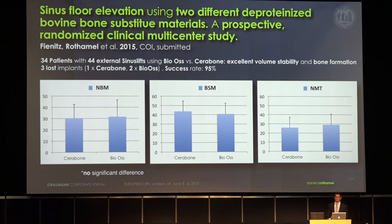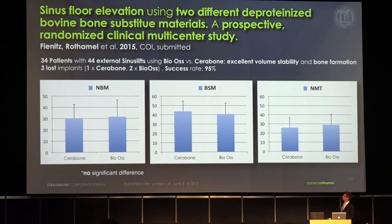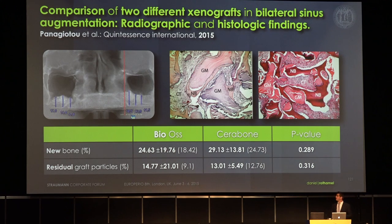We performed a prospective randomized multicenter clinical study comparing BIOS versus cerabone — a non-sintered versus sintered material — in 44 external sinus lifts in 34 patients. We found excellent volume stability and nice bone formation for both materials. Newly formed bone matrix was approximately 30% for both groups, bone substitute material approximately 40-43%, with no statistically significant difference in non-mineralized tissue. Another group published similar results this year: new bone 24% for BIOS and 29% for cerabone — again not statistically significant. Both materials support bone formation inside the sinus with the same quality.